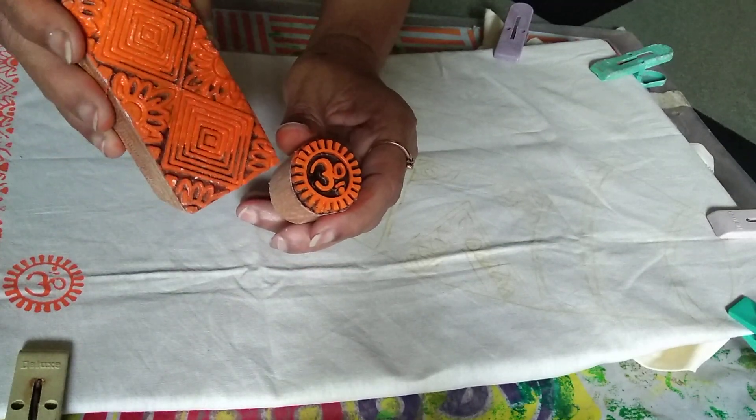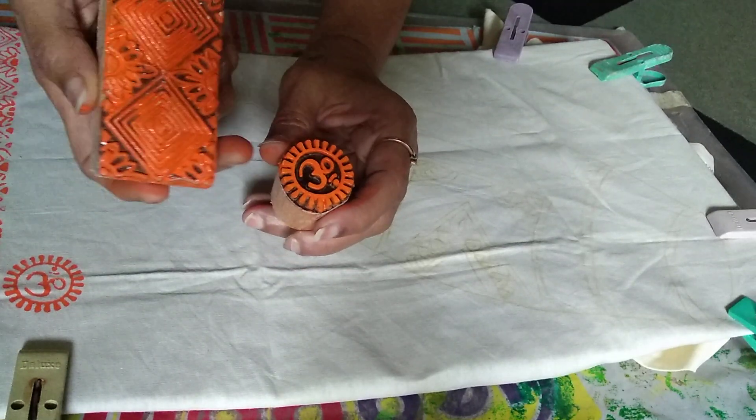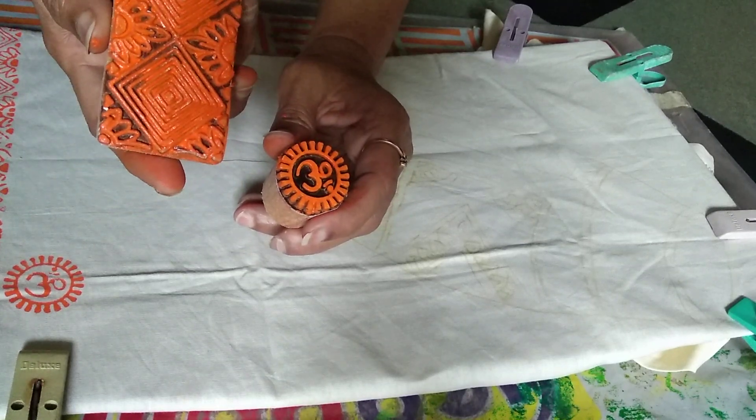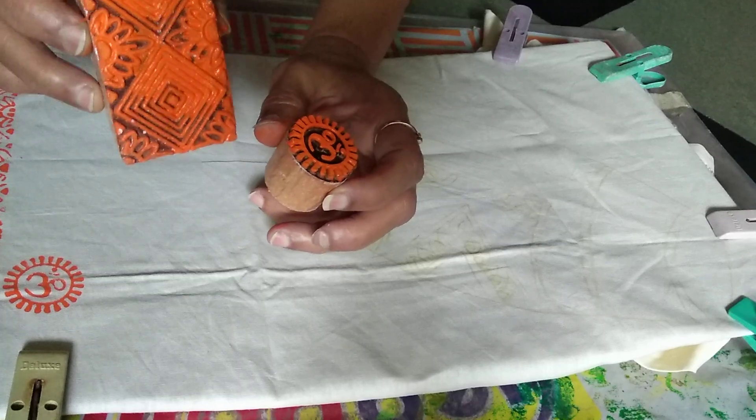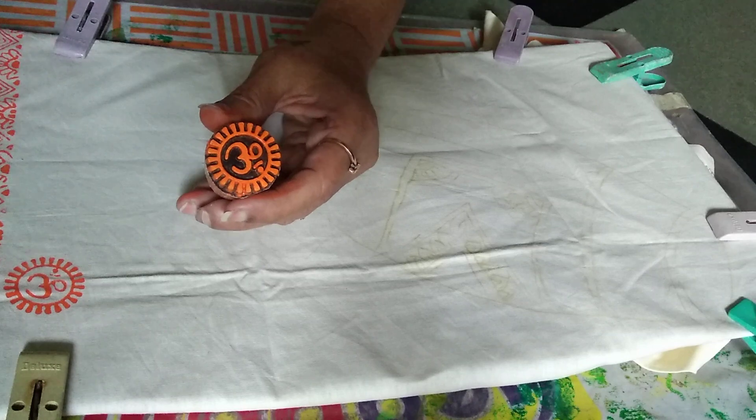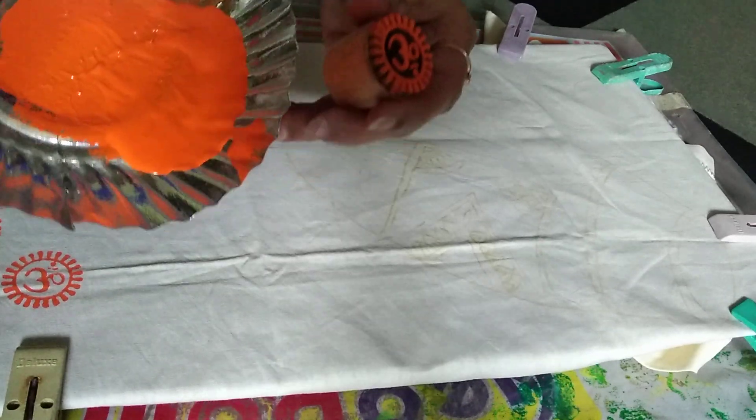You can order them online also. You get rubber stamps too, but I prefer these wooden ones. So how can you paint with this? When we paint with this, see I have taken the color here in the plate and I have a roller.